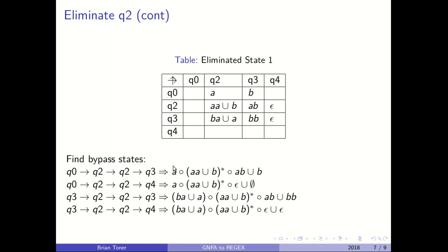So again, we do the exact same procedure here. If we're trying to figure out Q0 to Q3, we need to start off at Q0, and we need to end up in Q3. So we take A, we concatenate it with AA union B, and we concatenate that with AB, and then finally we union that with B. And that's exactly what we did here. Again, I'm not going to bore you with all the details here, but again, if we were trying to bypass going from Q3 to Q4, for instance, we would start off saying, well, we want to go from Q3 to Q4, and we want to do that through Q2.